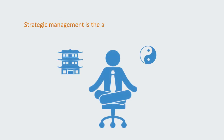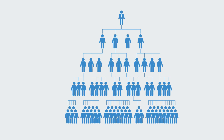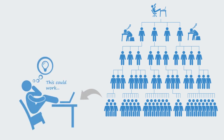Strategic management is the awareness, intelligence, and leadership of the organization. This doesn't necessarily have to be at the top of some hierarchy. The organization may become corrupted, in which case those in positions of leadership are no longer aware of the organization or environment, or for some other reason do not act in the long-term interests of that organization. Thus, leadership can come from any position — it can be anyone in the organization that is aware of how the organization works and takes leadership by acting in a way that is in the best interests of that organization, in that environment, irrespective of how others may act.